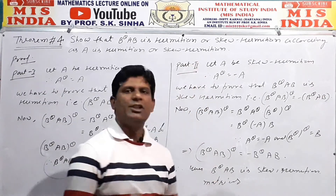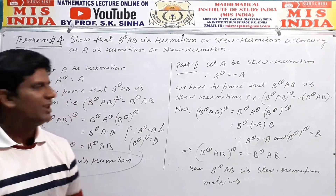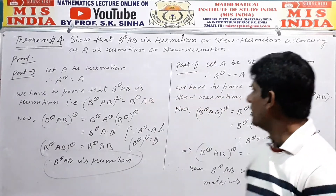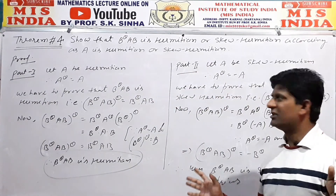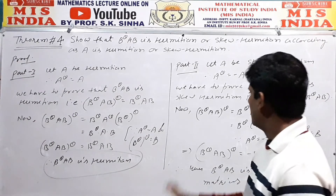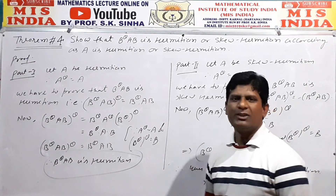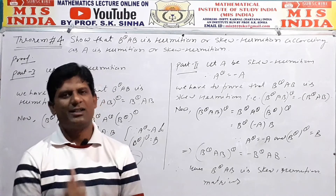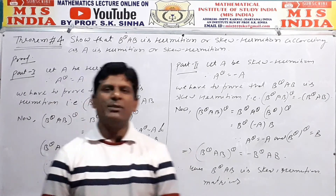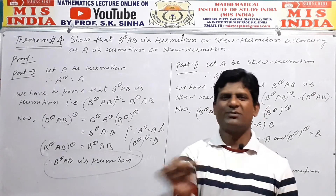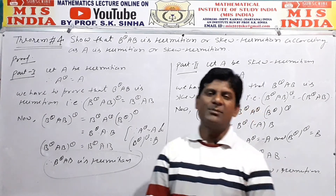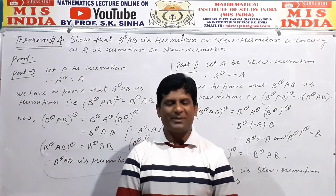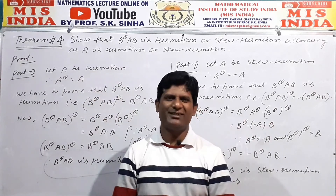So in the first part, B^θ AB is Hermitian, and in the second part, B^θ AB is skew-Hermitian. Both parts are proven. This is the theorem we have done. If you have any problem with this theorem, go to my YouTube channel and write your problem in the comment box — I will definitely solve it. Thank you very much and all the best. Bye bye.